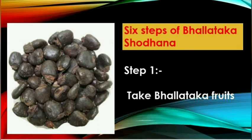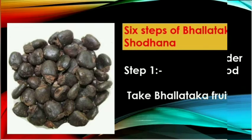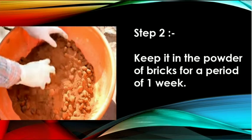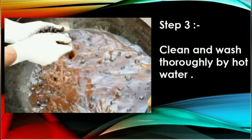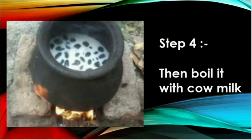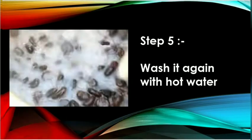6 steps of Bhallatak Shodhana. Step 1: Take Bhallatak fruits. Step 2: Keep them in the powder of bricks for a period of one week. Step 3: Clean and wash thoroughly with hot water. Step 4: Then boil with cow milk.